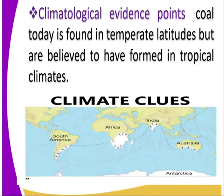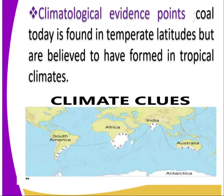Then we also have the climatological evidence. Coal today is found in temperate regions, but it is believed to have been formed in tropical climates. Look at the distribution of the coal across South America, Africa, India, and Australia. If you bring them together, they can join very well, supporting the theory.